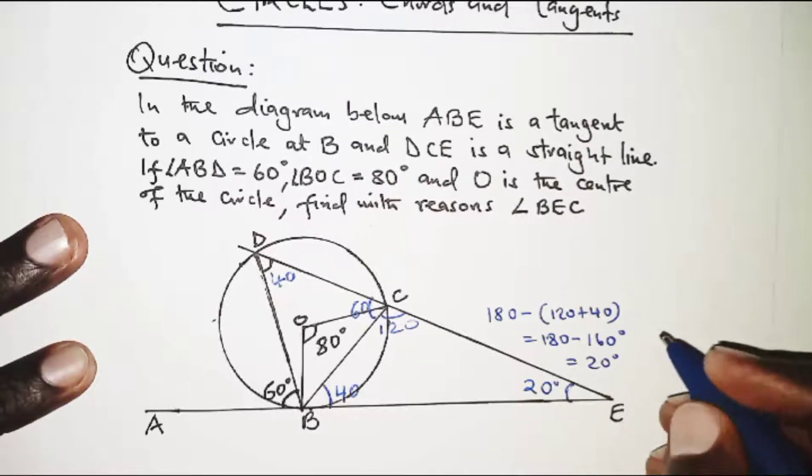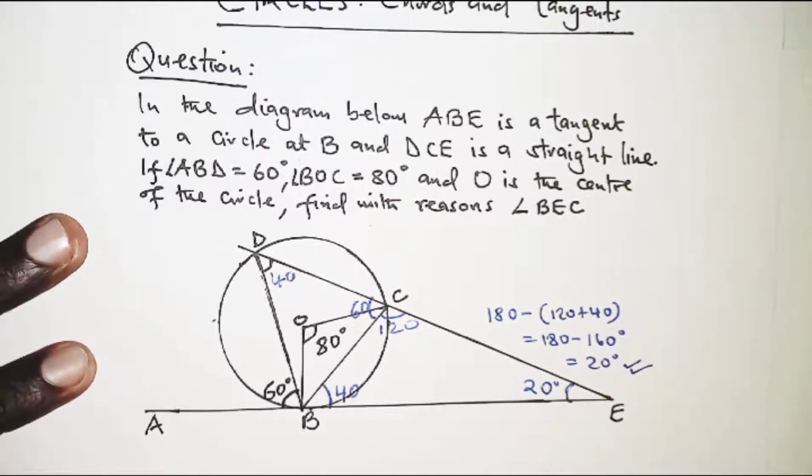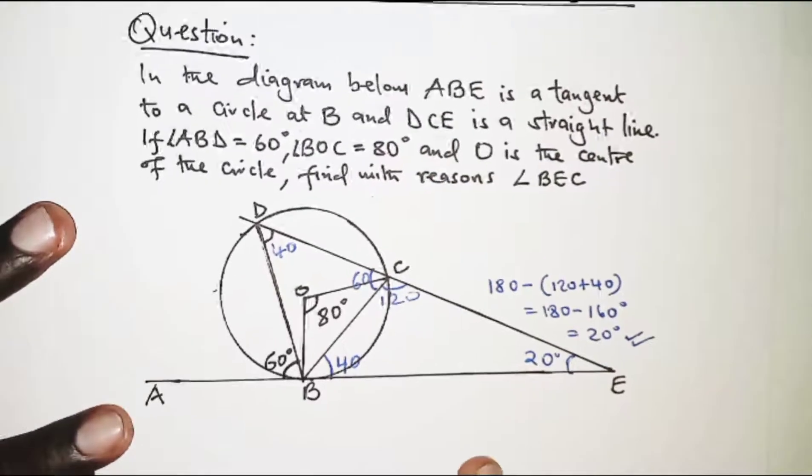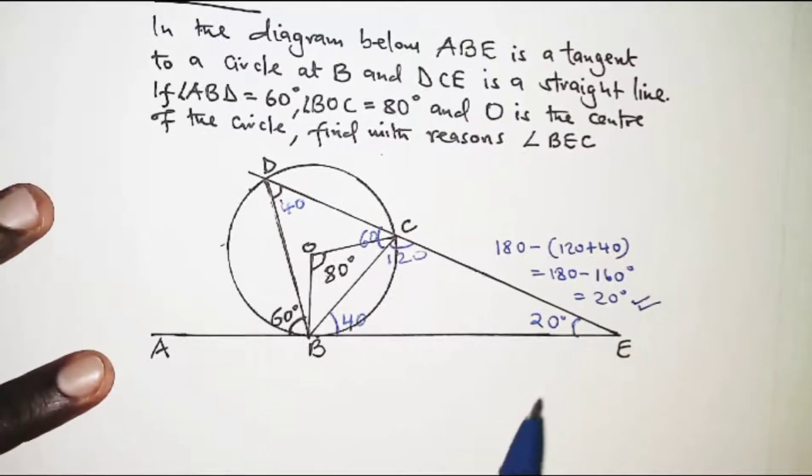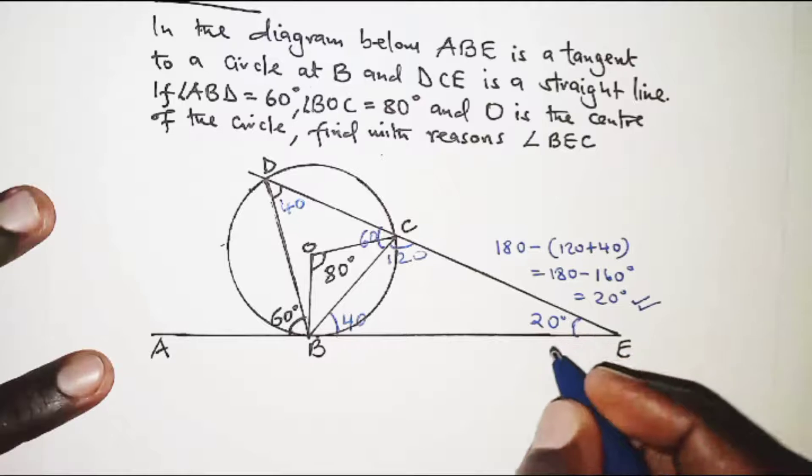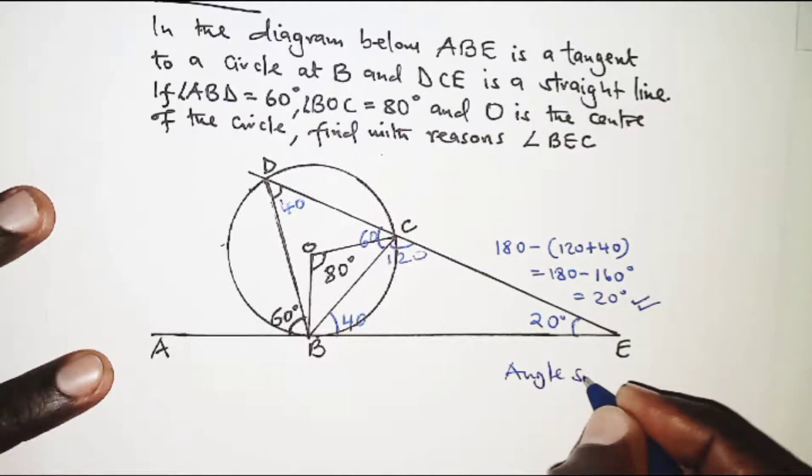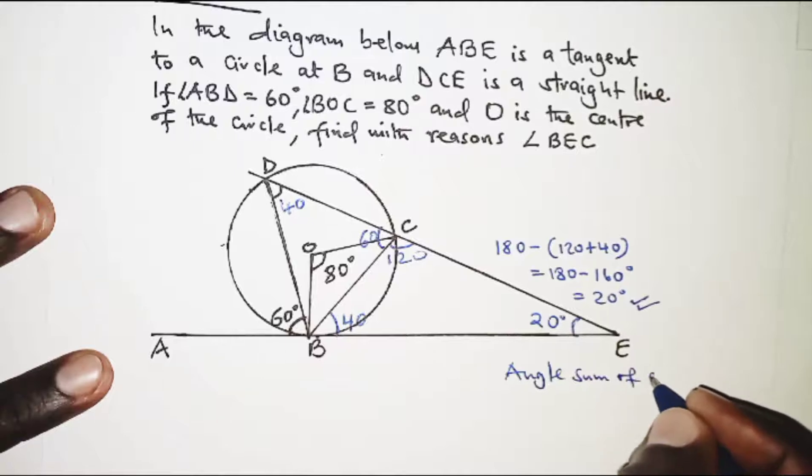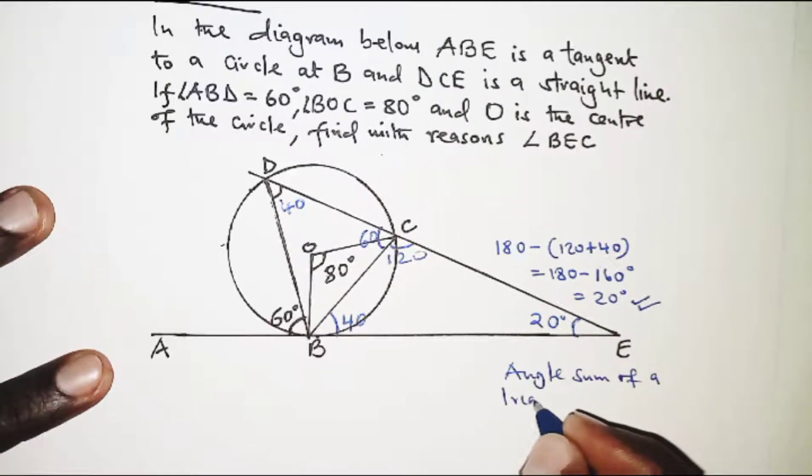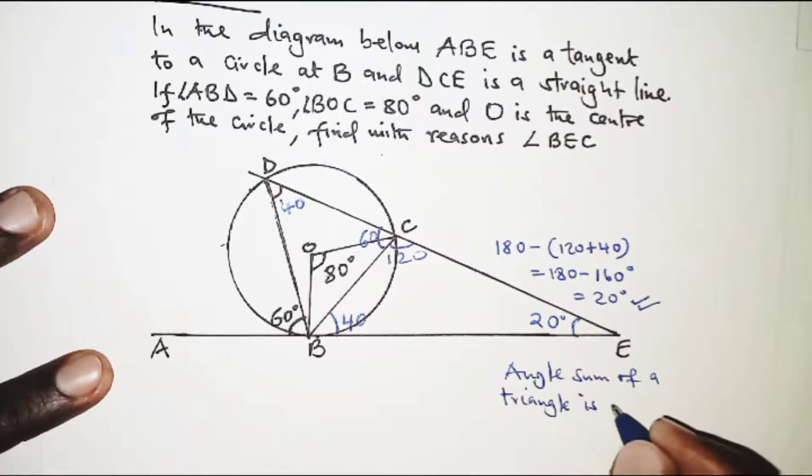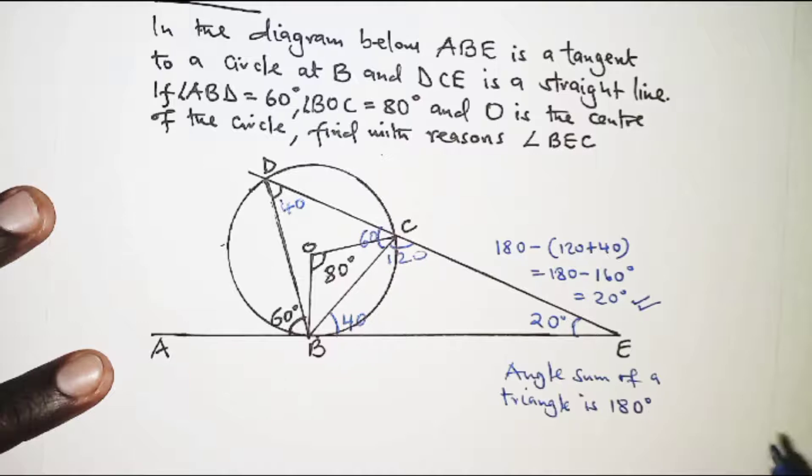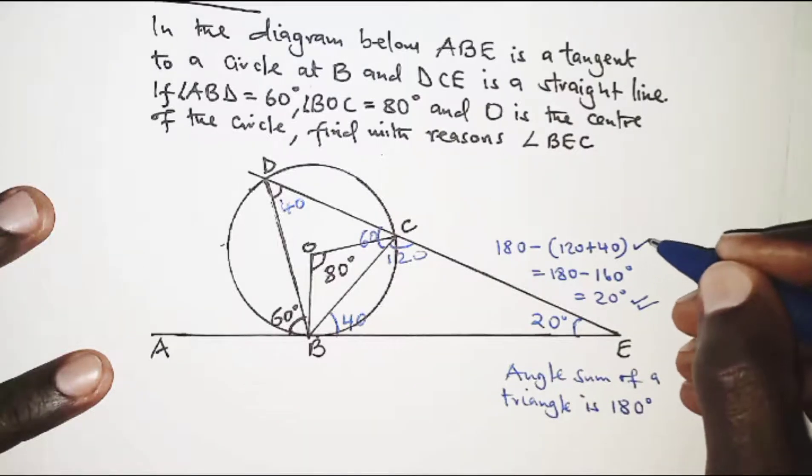At point E we have 20 degrees. With this we can now give the reasons, and the reason we can give is that the angle sum of a triangle is 180 degrees. Remember, that is the property that we have applied here.